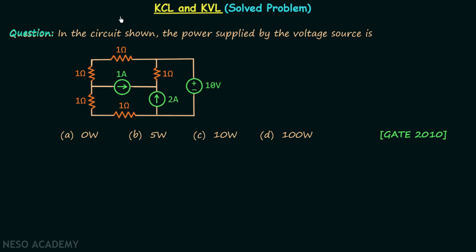We know how to apply KCL and KVL and now we are going to solve one problem using these two laws. According to the question, in the circuit shown, the power supplied by the voltage source is to be determined.